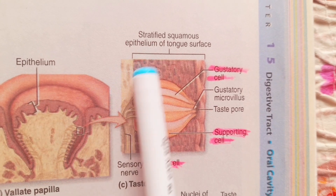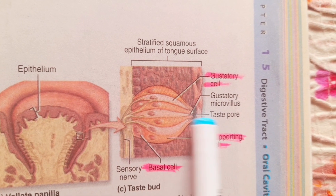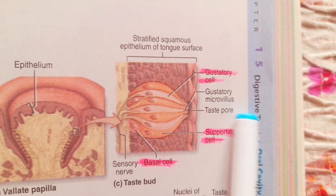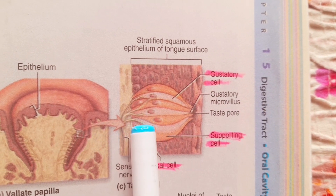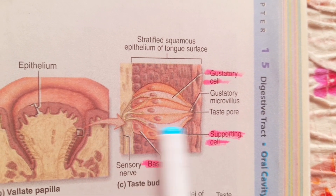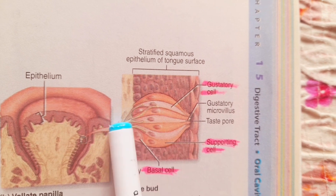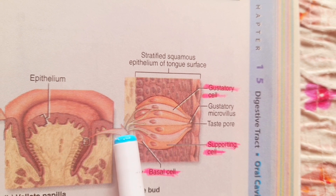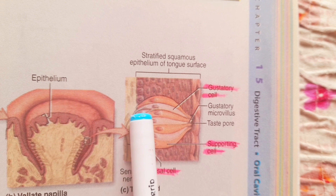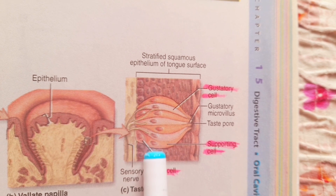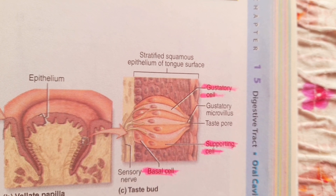In the diagram of the taste bud, the apex opens into the oral cavity through the taste pore. The taste bud contains three types of cells: basal cells, sustentacular cells, and gustatory cells. The gustatory cells contain sensory nerve endings that convey taste perceptions to the central nervous system.